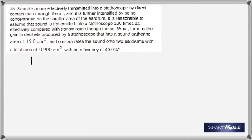Well, this is talking about using a stethoscope and it's a big problem. Please read it. And it says that sound is transmitted into a stethoscope 100 times as effectively compared with direct transmission through the air. And what then is the gain in decibels produced by a stethoscope that has a sound gathering area of 15 cm squared. That's the area at the end of the stethoscope that touches the chest of the patient. And at the other end, the area is smaller, it is much smaller. In fact, 0.9 cm squared. That's what goes into the doctor's ears. And the efficiency is 40%. So we are assuming that in practice all the energy of sound from the patient's chest will not get to the doctor's ears. Only 40% gets there.